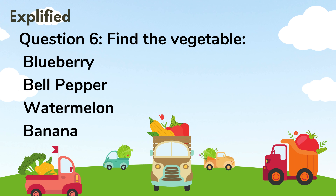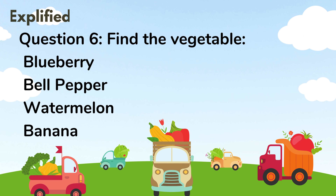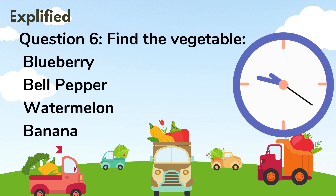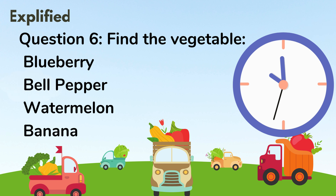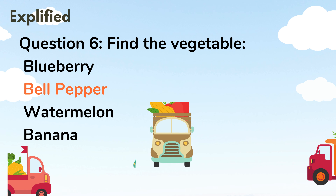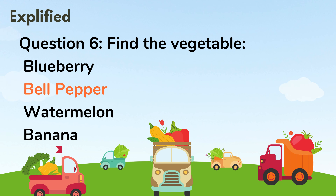Question 6: Find the vegetable. Blueberry, Bell pepper, Watermelon, Banana. Answer: Bell pepper.